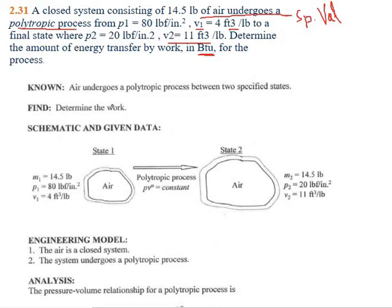Air undergoes a polytropic process between two specified states. We have to determine the work. At state 1, pressure is 80, initial volume is 4, and mass is 14.5 pounds. The system undergoes a polytropic process to state 2, where final pressure is 20, final volume is 11, and mass is the same.